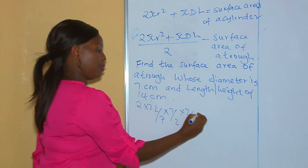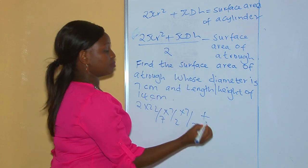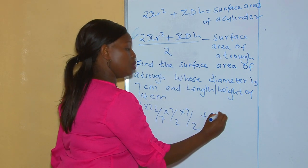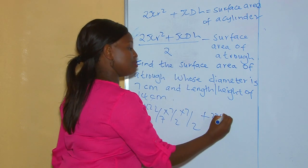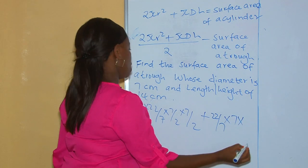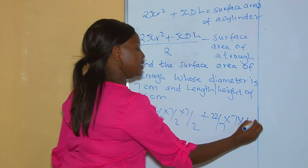For the second part of the formula, we add πdh, which is (22/7) × 7 × 14.